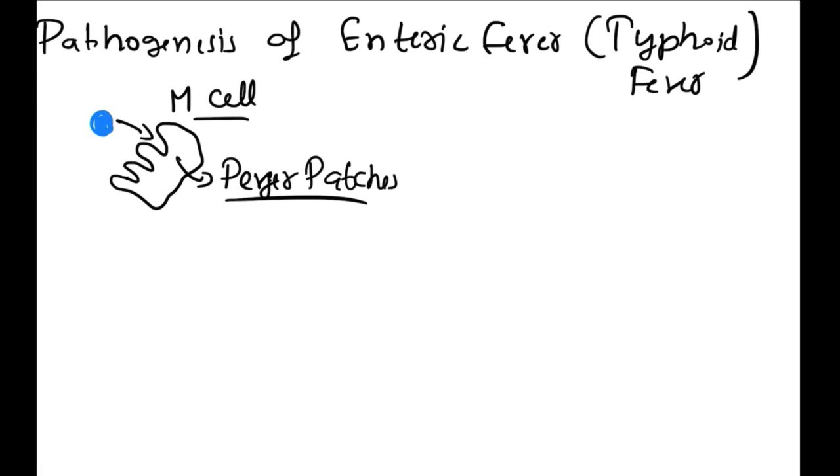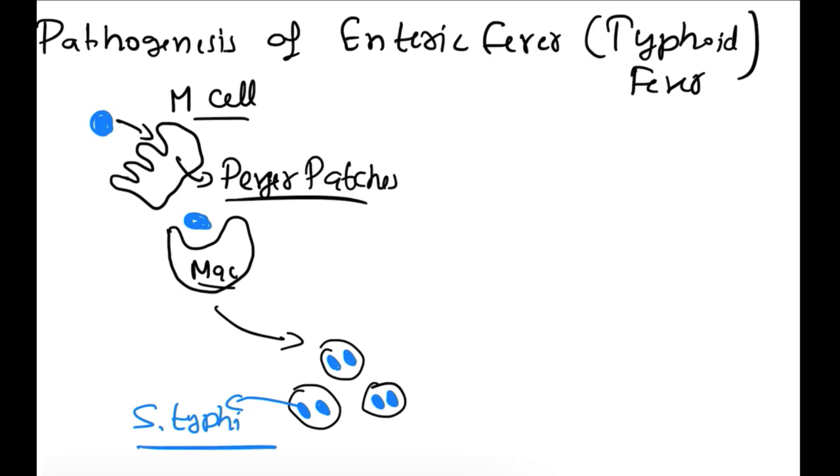In the Peyer's patches, the resident macrophages will engulf this bacteria. Then these macrophages will get into mesenteric lymph nodes. These are the bacteria. Now, these bacteria will from here go to the blood vessels. This is the first time when this bacteria has gone into the systemic circulation of the body.